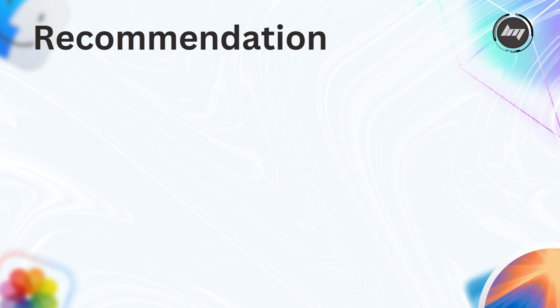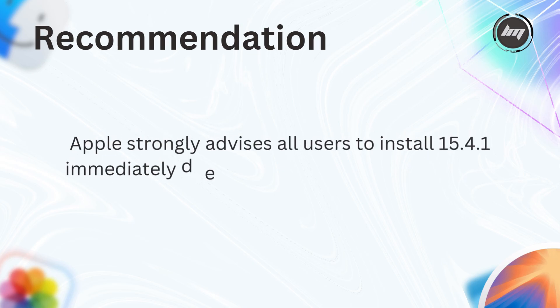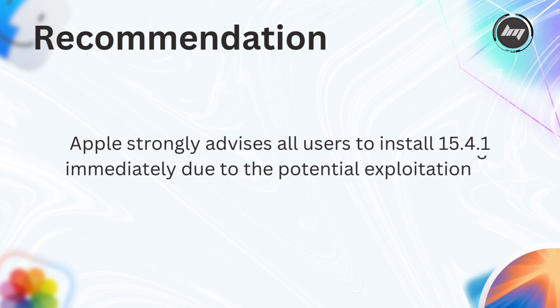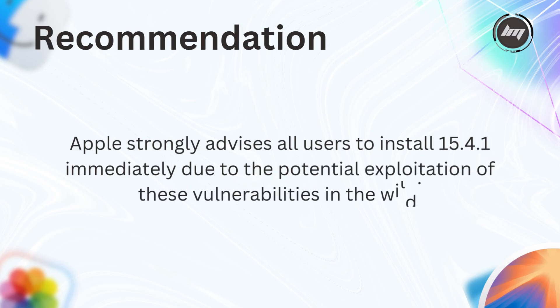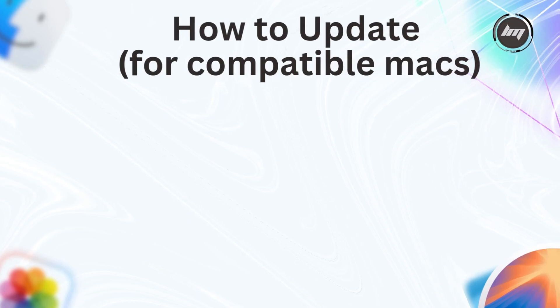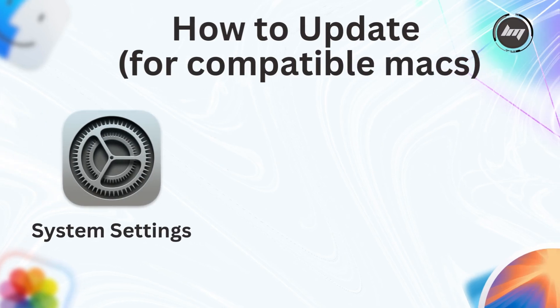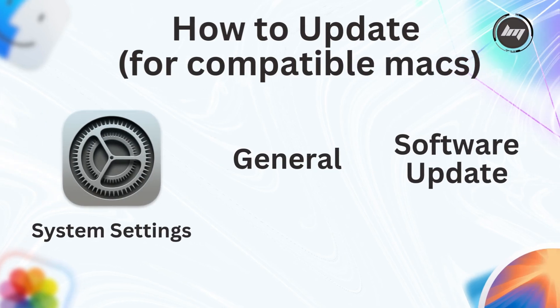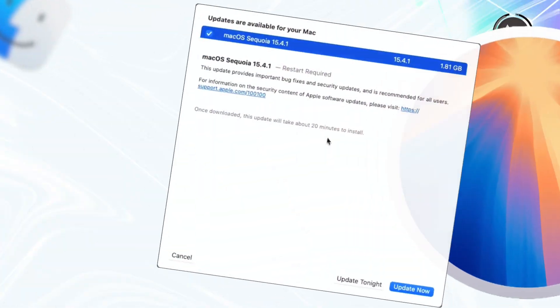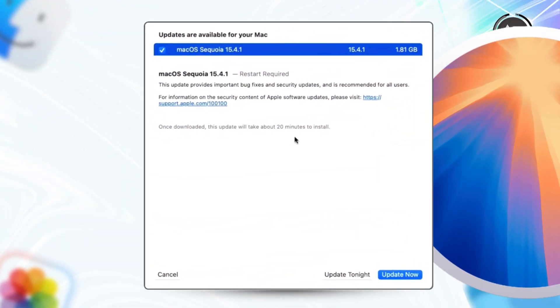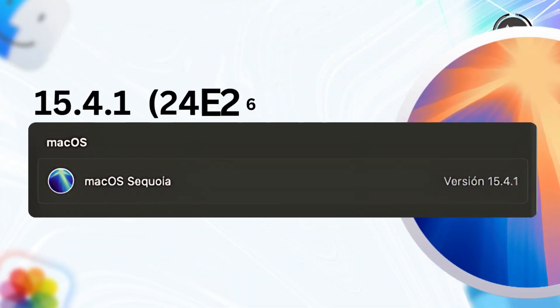Apple strongly advises all users to install 15.4.1 immediately due to the potential exploitation of these vulnerabilities in the wild. You can update by going into System Settings, then General, then Software Update on compatible Macs running macOS Sequoia. The build number follows 15.4-24E247.